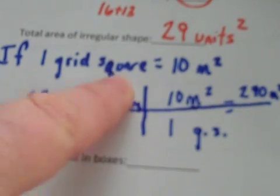Alright, do you remember when we talked about how to do conversions? One way to solve this problem is with conversions, and this is really good practice for you. So if I tell you that one grid square is equivalent to 10 square meters, and I know that my picture covers 29 grid squares, right? That's why I said it was 29 units squared.